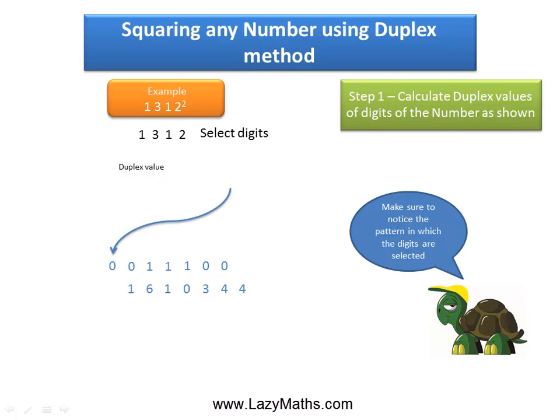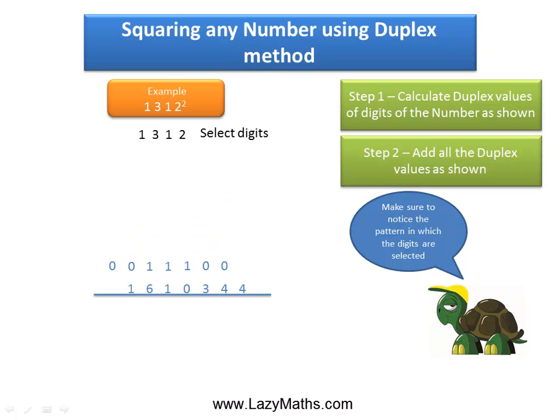And then finally we add these digits as they are shown here. So we get the 4, 0 plus 4 is 4, 0 plus 3 is 3, 1 plus 0 is 1, 1 plus 1 is 2, 1 plus 6 is 7, 0 plus 1 is 1 and the 0 we can leave it as it is. And we get the final answer.